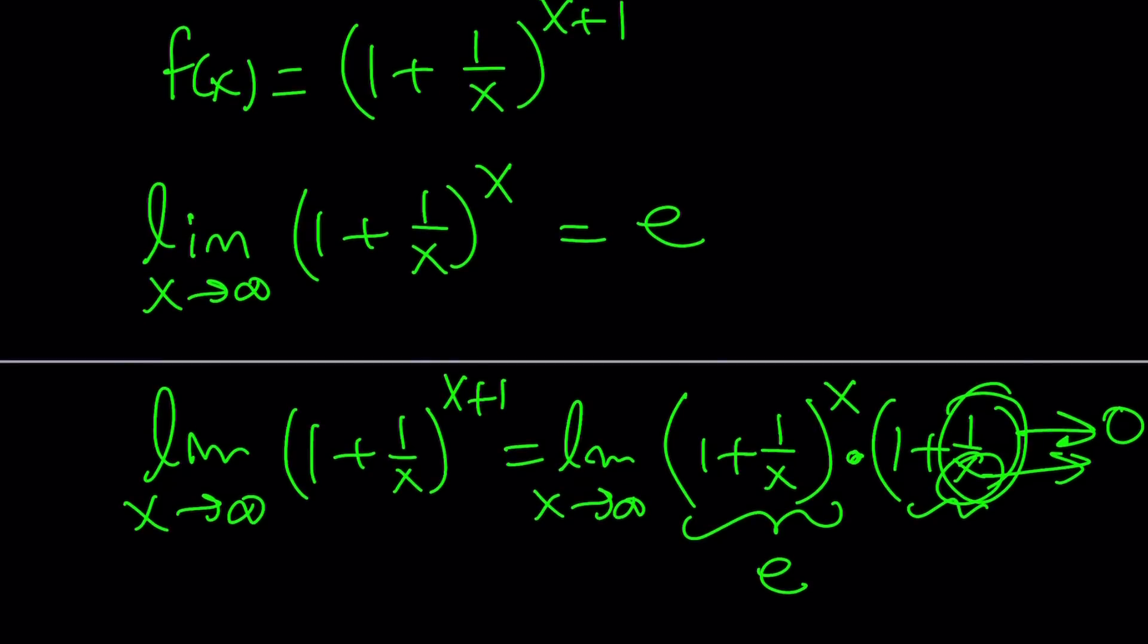Now, our limit is e, but that doesn't tell us anything about whether the function is decreasing or increasing. It just says we have a horizontal asymptote, right? Oh, speaking of asymptotes, is there a vertical asymptote?